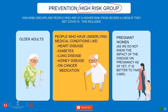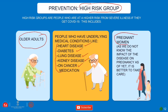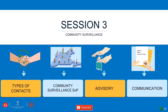High-risk groups are people at higher risk of severe illness if they get COVID-19: older adults, people with underlying medical conditions such as heart disease, diabetes, lung disease, kidney disease, or those on anti-cancer medication. Also, comorbid patients and pregnant women, since the impact of COVID-19 on pregnancy is not yet fully known. Children are also included. These people should stay home unless necessary.